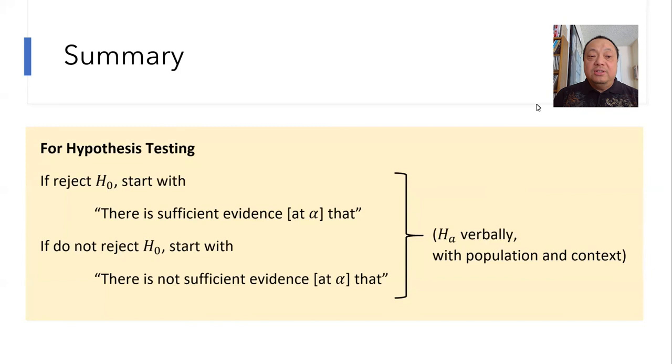For hypothesis testing, two different situations. If p-value less than alpha and you reject H0, start your conclusion with, there is sufficient evidence, and optional, insert the alpha, that. If p-value is not less than alpha and you do not reject H0, start with, there is not sufficient evidence, that.